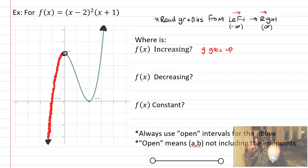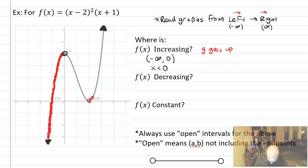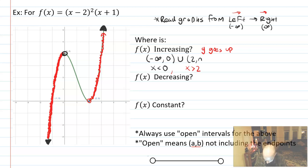I shaded in red all the way up to zero, so I'm increasing from negative infinity up to zero, which I write as x less than zero. The graph starts increasing again at x equals 2, going up to infinity — x greater than 2. In interval notation, increasing is on negative infinity to zero, union two to infinity.